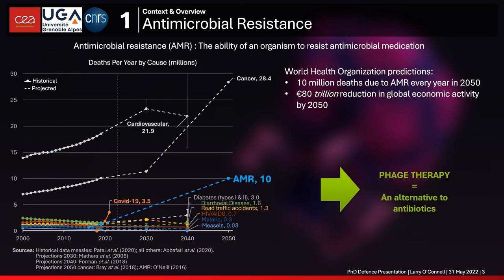A little bit of context for the project. We're all familiar with antibiotics — we get sick, we go to the doctor, we take an antibiotic, which helps kill the bacteria that makes us sick, and we get better. However, we've been using antibiotics far too much over the last 70 years, and now there's an increasing proliferation of antibiotic resistance genes in the bacteria that make us sick. This is called antimicrobial resistance, or AMR.